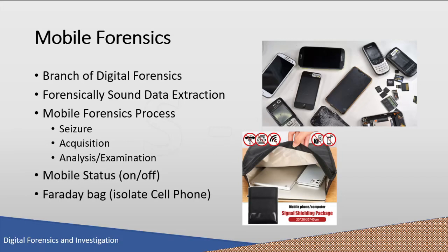Following proper methodology and guidelines is crucial in examining a mobile device, as it produces the most valuable data. The mobile forensic process is broken down into three main categories: seizing the device, acquisition, and examination or analysis of the data. Forensic examiners face challenges while seizing a mobile device as evidence at a crime scene. If the mobile device is found switched off, the examiner should place it in a Faraday bag, which is specifically designed to isolate mobile phones from the network.